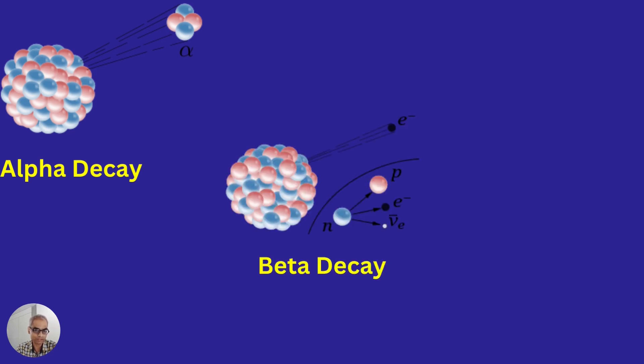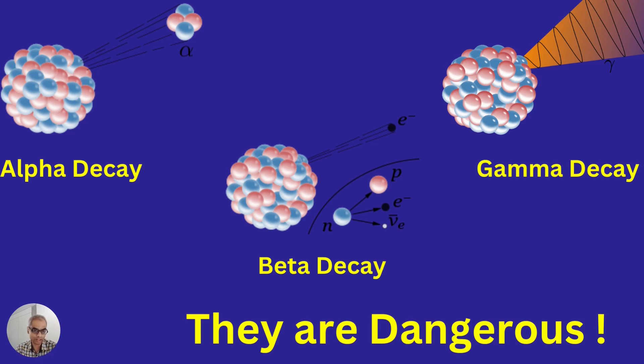Nuclear radiations can be detected by the GM counter. We have seen the effect of nuclear radiations in Hiroshima and Nagasaki. There are majorly three types: alpha decay, beta decay, and gamma rays — all of which are dangerous. Alpha decay consists of a helium nucleus with two protons and two neutrons. Beta decay is an electron with very high speed. Gamma rays are high-frequency, high-energy rays.